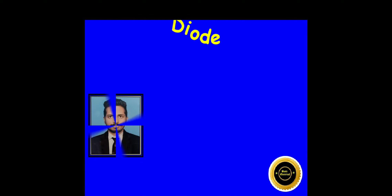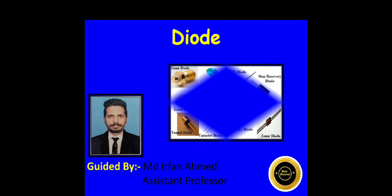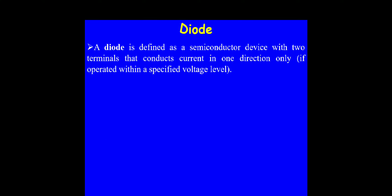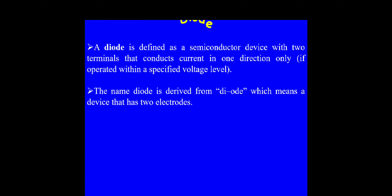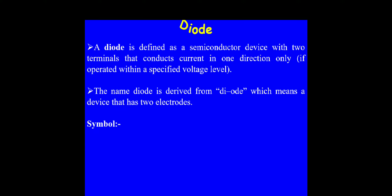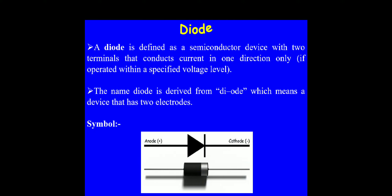Today we discuss about diodes — the fundamental topic of electronics. A diode is basically defined as a semiconductor device with two terminals that conducts current in one direction only, making it a unilateral device. As the name indicates, a diode has two electrodes: the anode (positive) and the cathode (negative), which you can see in the symbol diagram.